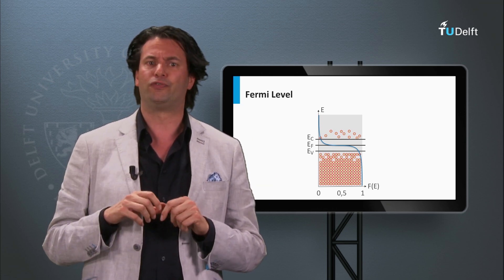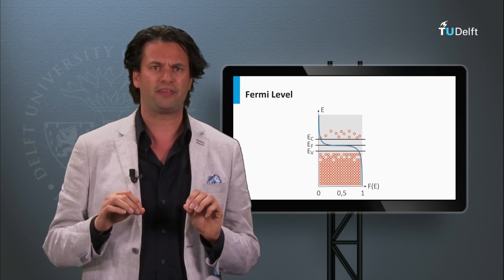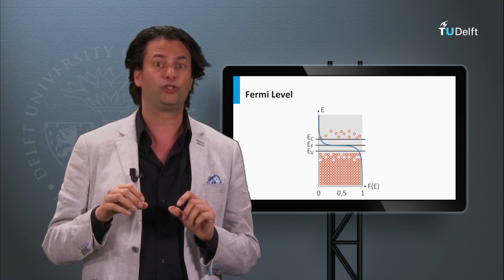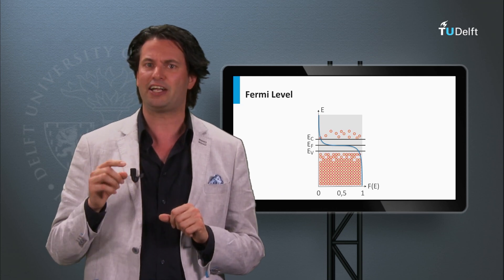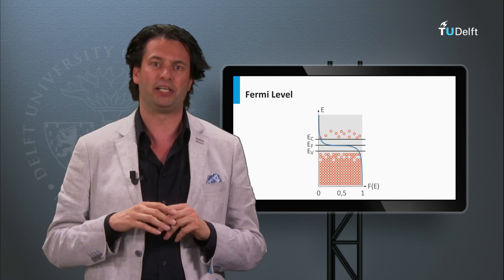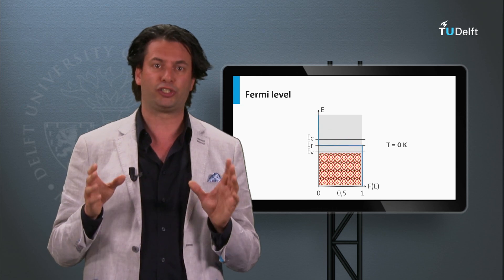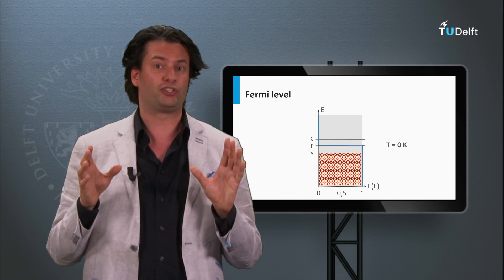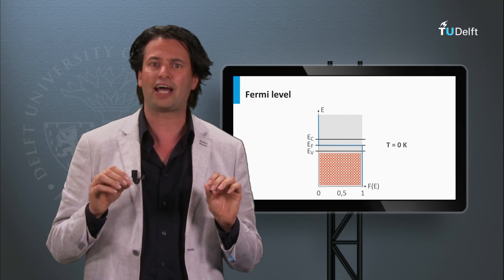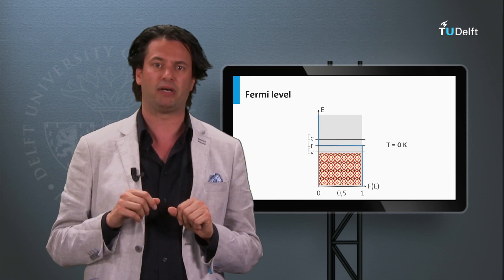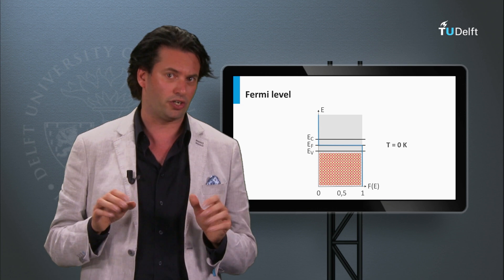In general, the Fermi-Dirac function shows that energy levels in the conduction band have a low probability to be occupied, while energy levels in the valence band have a high probability to be occupied. At absolute zero — a temperature of 0 Kelvin or minus 273 degrees Celsius — all electrons fully occupy the valence band, and the semiconductor material is not conductive.